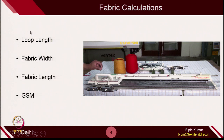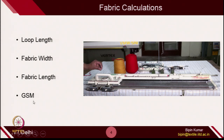In fabric calculation, there are 4 things I would like to focus on. The first one is loop length — how with the help of some machine parameters you can theoretically calculate the loop length. Then fabric width, fabric length, and GSM. I will give you important relationships to theoretically measure these parameters, which you can compare with experimental values introduced in previous lab demos.